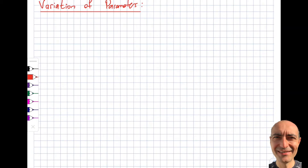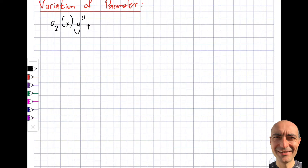Welcome everybody to a brand new segment where we focus on the variation of parameters. This is a new tactic we're going to investigate to solve second and higher order differential equations. This is still linear — I want to highlight that from the get-go. A second order differential equation looks like this: a_2(x)y'' + a_1(x)y' + a_0(x)y = G(x) for it to be linear.